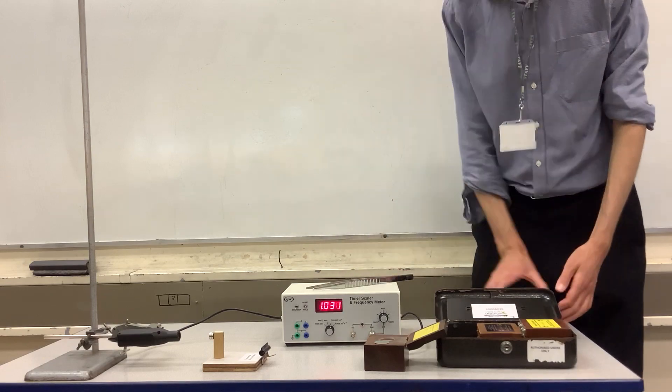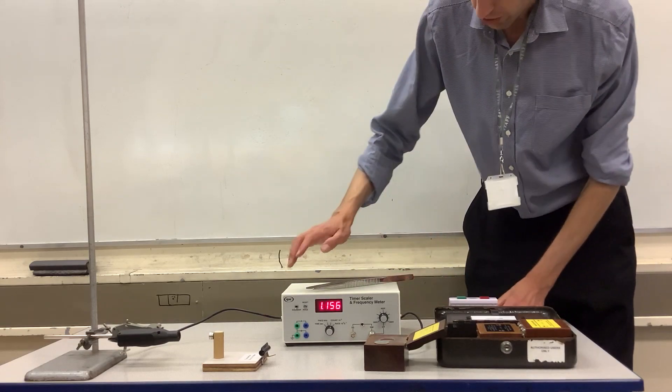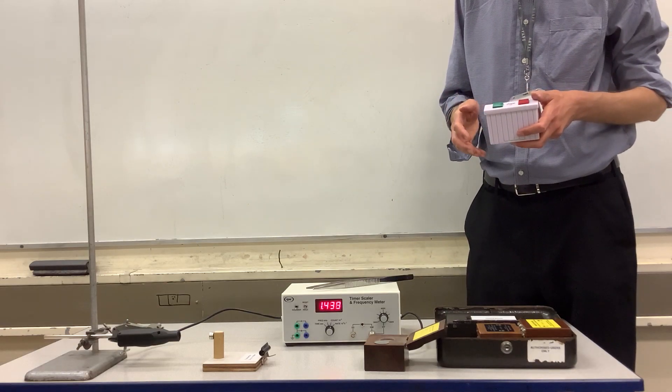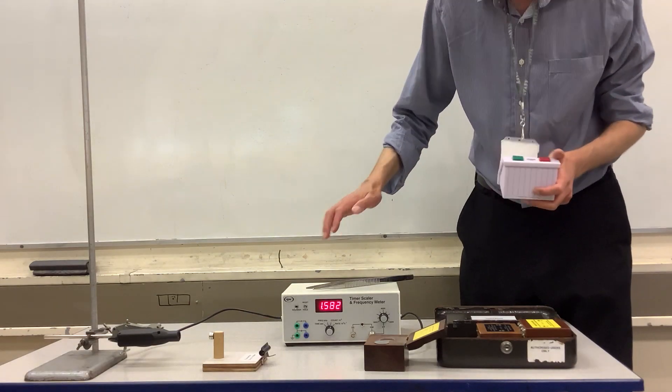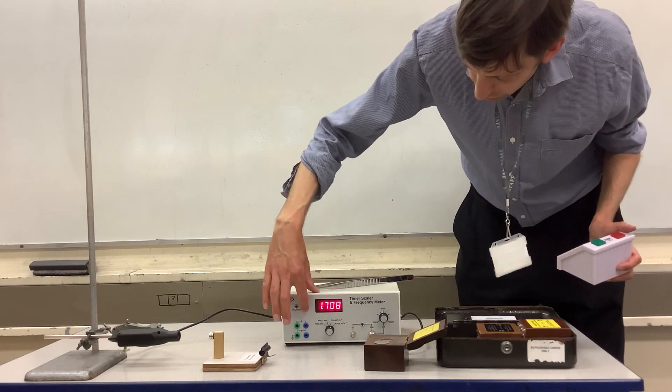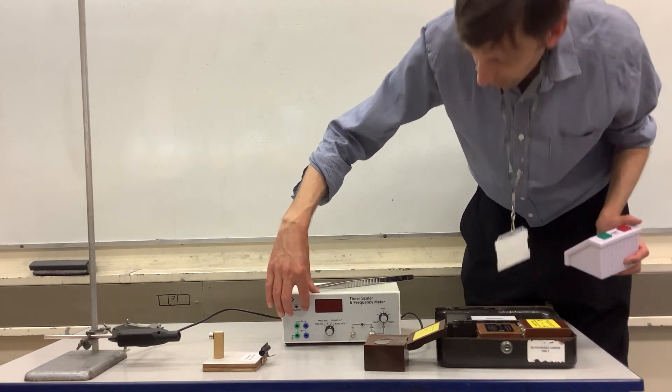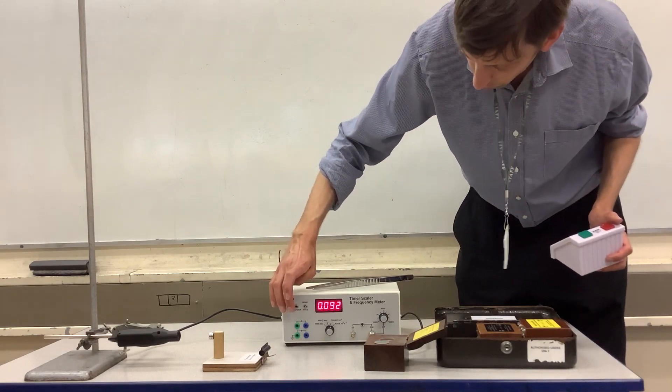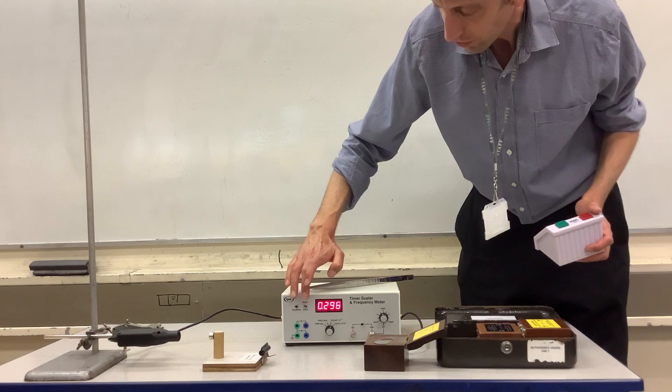We're going to aim to measure the count rate for this. What I'll need to do is time for 10 seconds at a time. At the start of the 10 seconds, I'll do the reset which will reset the counter to zero, and then when I'm ready to stop timing on 10 seconds, I'll press this down which will hold that.